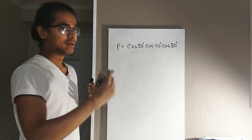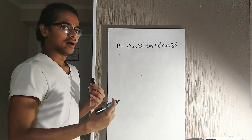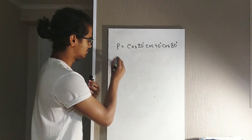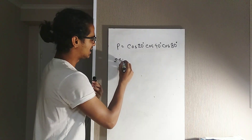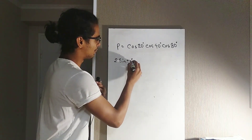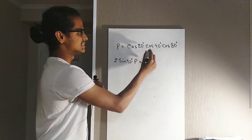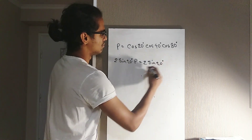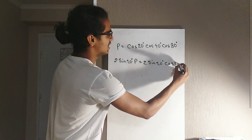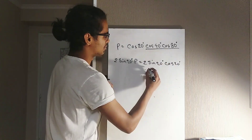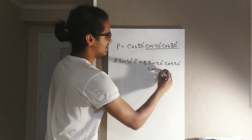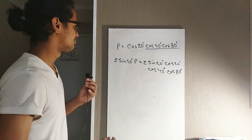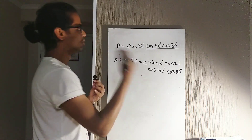What I'm going to do is multiply both sides of the equation — P = cos 20° · cos 40° · cos 80° — by 2 sin 20°. On the left side I'll have 2 sin 20° · P, and on the right side it will be 2 sin 20° · cos 20°, then multiplied by the two remaining terms: cos 40° and cos 80°.